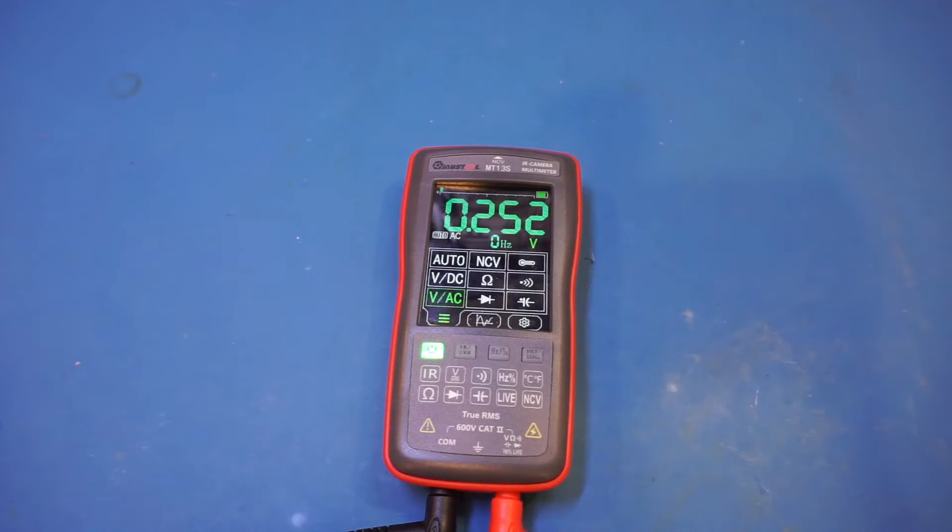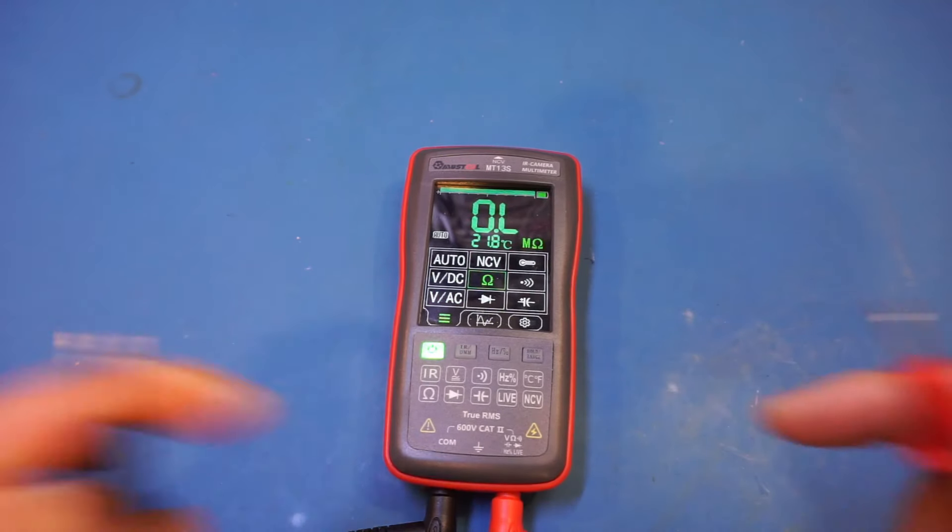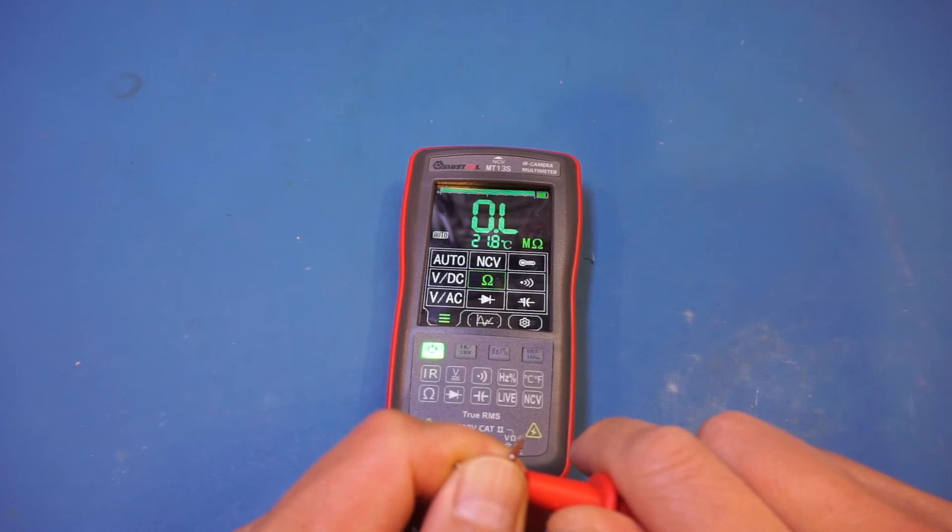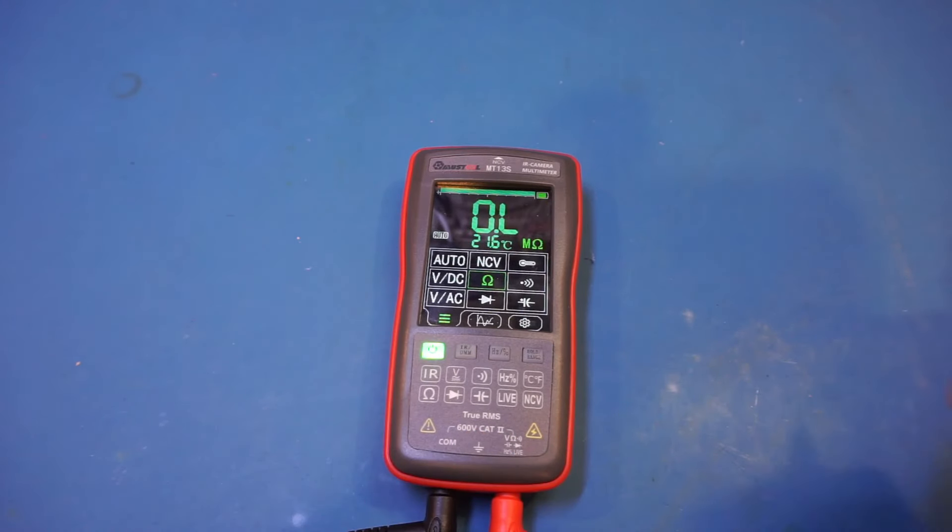All right, now let's take a look at the resistance measurement mode. And for that, I'm switching to ohm. Let's first short out the leads. And we're getting roughly zero ohm reading. So okay, so let's actually start with a 1k resistor here.